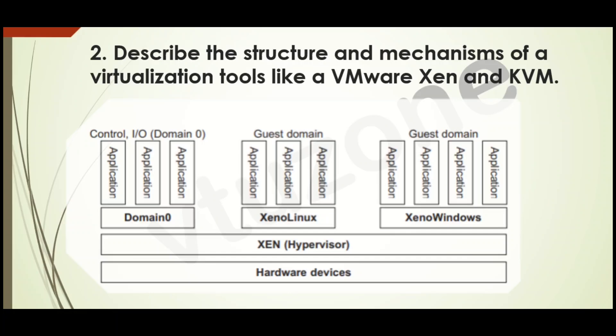On top of that, we have three types of domains. See Domain 0 — this is special; it controls the system and manages input/output. Think of it like the admin of the house. Then guest domains — these are normal virtual machines like Xeno Linux or Xeno Windows, where users run their applications just like on a regular operating system. So basically, Xen creates separate rooms or domains inside one building — that is your computer — each running a different operating system safely and independently.